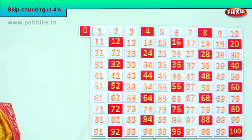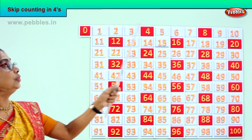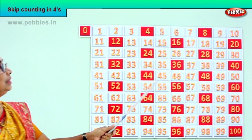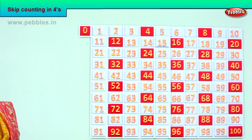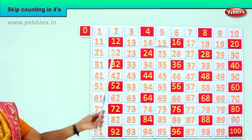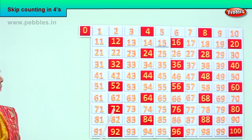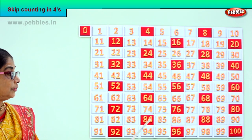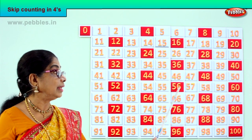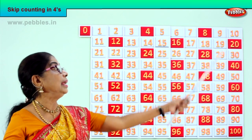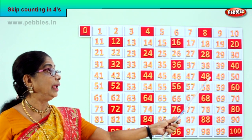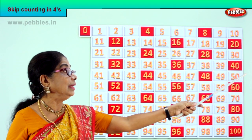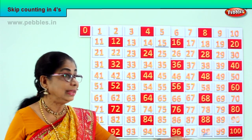Now look at the pattern. See what you have here. From 1 to 10, you have just two numbers. Look at this in the second — you see the beautiful pattern it follows. Yes? Look here: 12, 32, 52, 72, 92. 4, 24, 44, 64, 84. 16, 36, 56, 76, 96. 8, 28, 48, 68, 88. And 20, 40, 60, 80, 100.